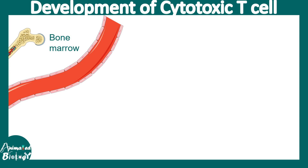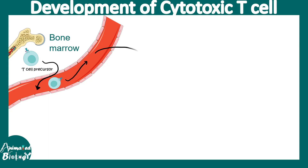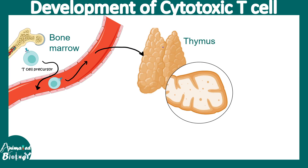They all start in the bone marrow, where hematopoietic pluripotent stem cells give rise to lymphoid and myeloid progenitors. All lymphocytes are lymphoid progenitor derivatives. The T cell precursor, originating in the bone marrow, leaves and travels through the bloodstream to eventually reach the thymus.